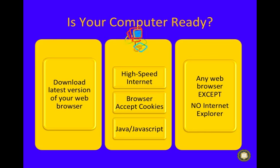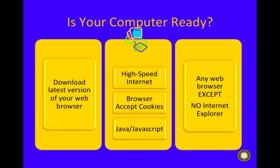After you have reviewed the orientation document, you will want to prepare your computer for the course. Download any web browser except Internet Explorer and make sure to have the latest version of the browser. The latest version of each browser except Internet Explorer is fully supported. If a new version of a web browser is released during the course, check the announcements on the course website before upgrading to a newer version.